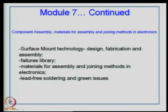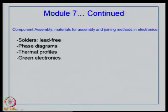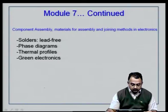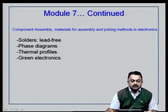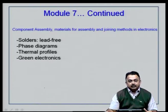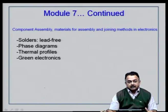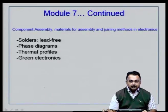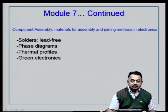We will continue with Module 7 of this course on electronic systems packaging. So far in this particular module, the topics covered included all the assembly techniques, and in the previous lecture we saw the defects — or in other words, the failures library — extensively dealt with, and we also looked at lead-free solder materials. Today we are going to continue with materials issues and thermal profiling, which is very important in industry when assembling thousands of boards. Entities like substrate properties, component properties, and solder paste material properties together define the thermal profile.